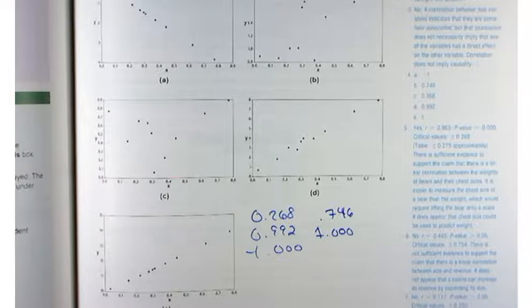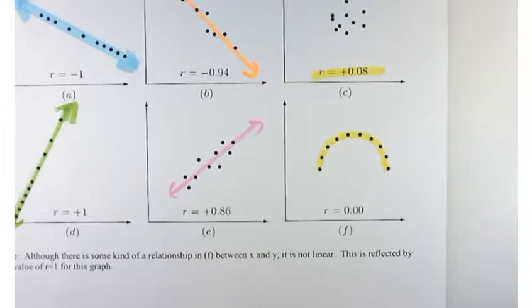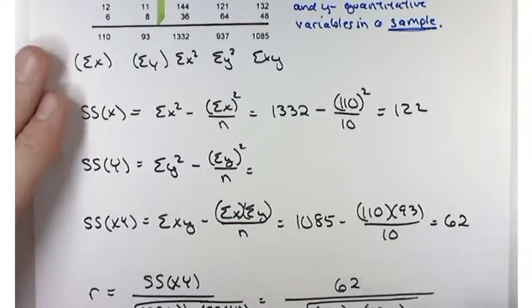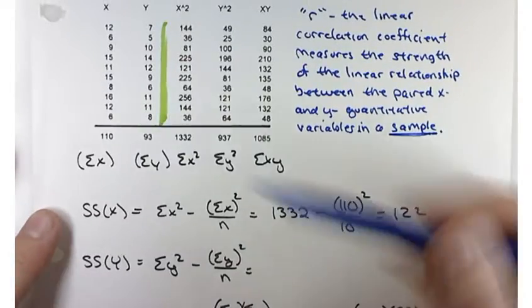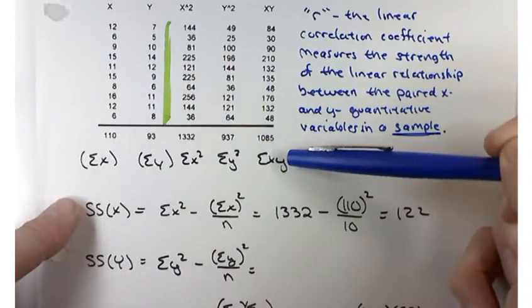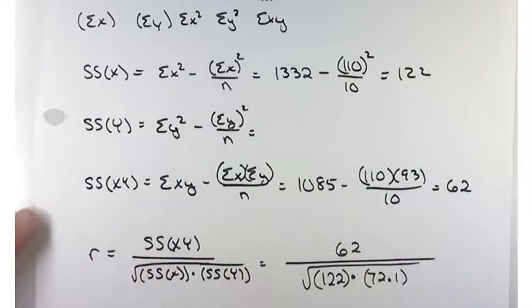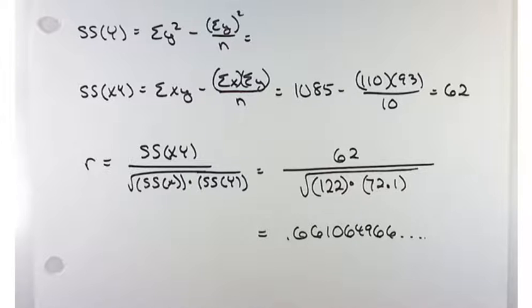The good news is we don't have to calculate R by hand. What people used to have to do was enormous: sum up columns, square each column and sum them, take products, calculate ratios under a square root — it would take about 20 minutes for a simple problem. Fortunately, technology is coming through for us.